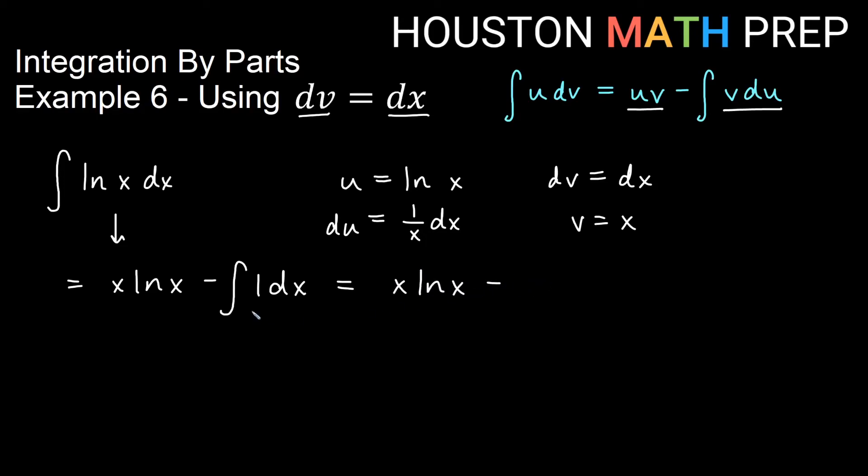And then if we complete this last little bit of integration here, what is the antiderivative of 1 dx? Well, it's just x plus c. And you may have memorized this one, wonder where it came from, or maybe you're just exploring how to integrate by parts using dv as dx. There we go. x ln x minus x plus c.